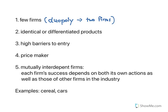The fifth characteristic is mutually interdependent firms — let me spell that correctly: interdependent firms. That means each firm's success depends on both its own actions as well as those of other firms in the industry. This is the critical characteristic of this market structure, and it's one you really, really need to zero in on.